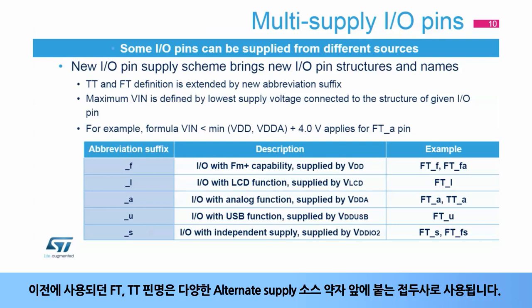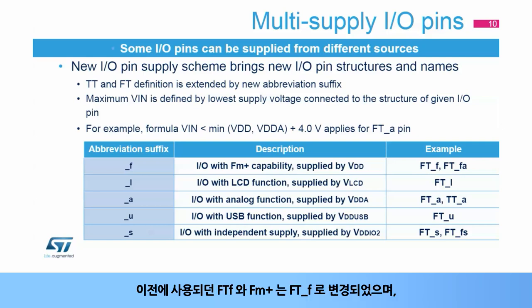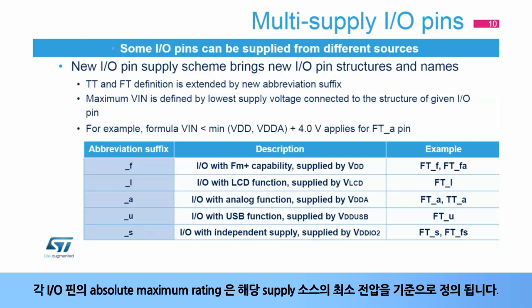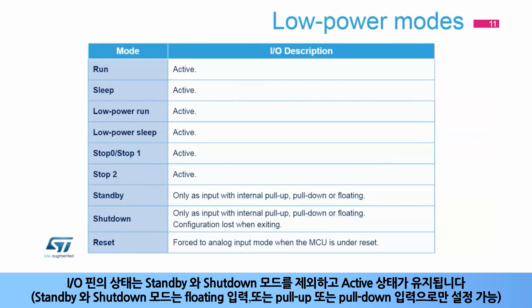Previously used naming FT-TT has been extended by abbreviation suffixes to highlight alternate supply sources for each FT and TT I/O pin. Previously used name FTF for FM plus capable pins has been transformed to FT_F. The new underscore L suffix marks pins supplied through LCD supply. Suffix underscore A marks pins supplied by analog supply. Suffix underscore U is used for pins supplied from USB supply, and suffix underscore S identifies pins within the independent VDDIO2 supply domain. The absolute maximum rating for each I/O pin is defined by the lowest voltage of the supplies listed for each I/O pin. I/O pins remain active in all modes except standby and shutdown, where the only available configuration is input with internal pull-up, pull-down resistor, or floating input.